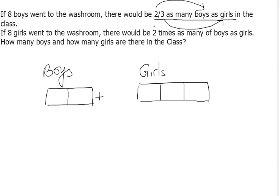Now let's take the other condition: if eight girls went to the washroom, there would be two times as many boys as girls. So now boys are going to be two times as many as girls, so this is probably going to be like one unit for the girls, two units for the boys.